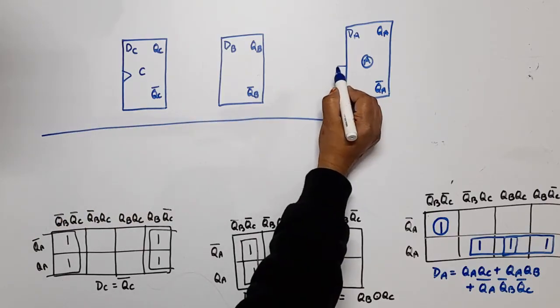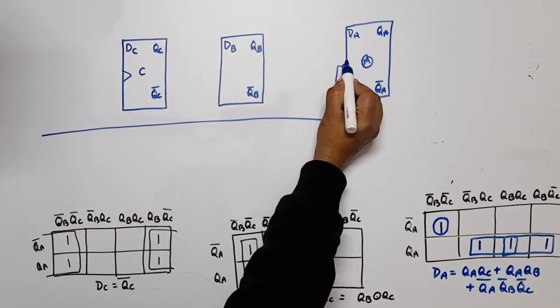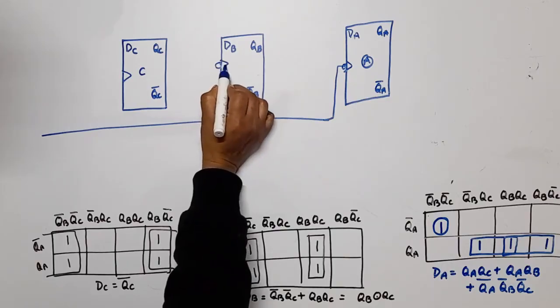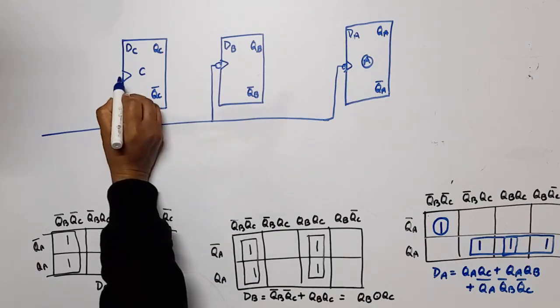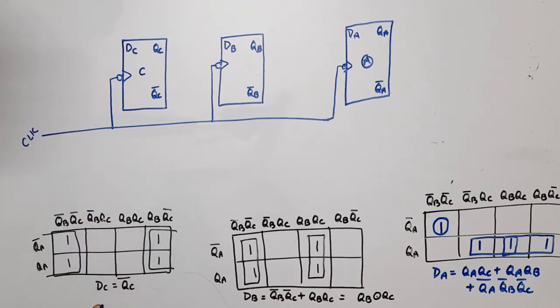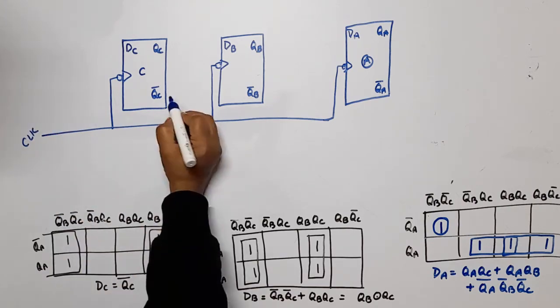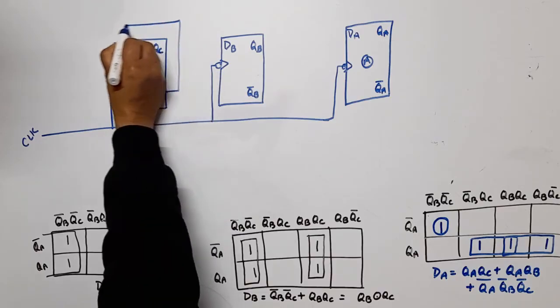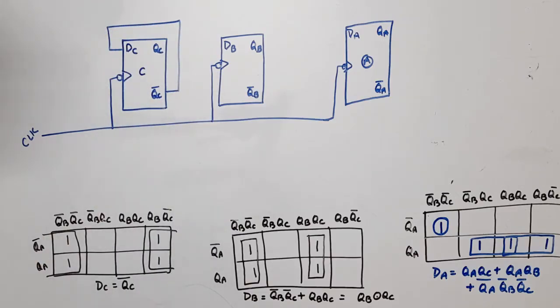Same clock we applied. And then we applied this clock. Now one by one, for dC, input is QC bar, means this QC and we have feedback. QC bar, we have feedback. Now for dB, what is dB? QB XNOR with QC, means that we need an XNOR gate.